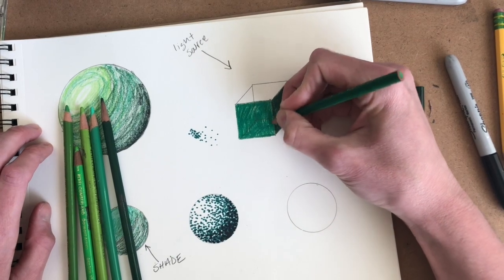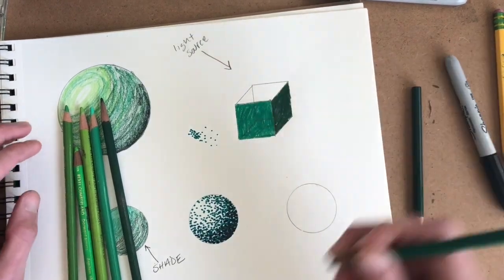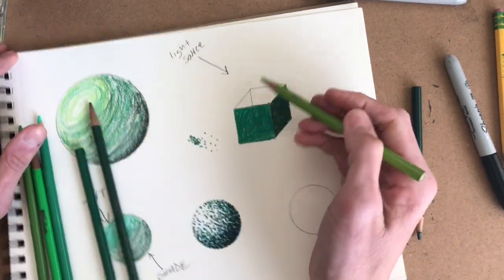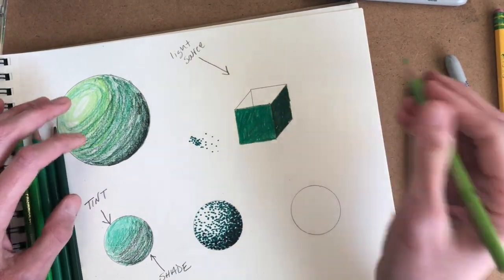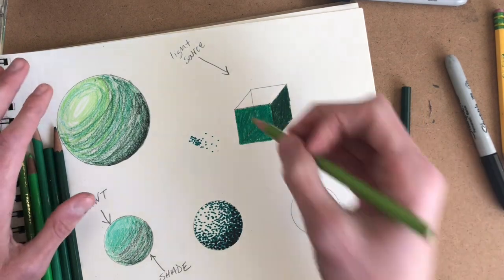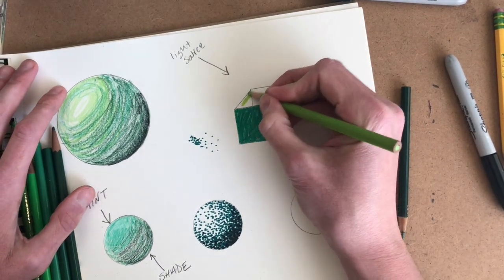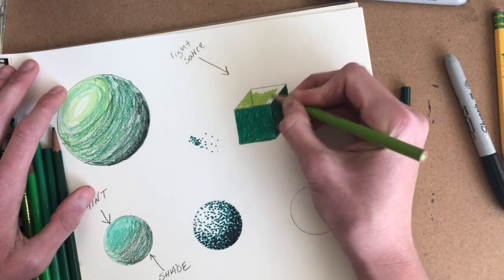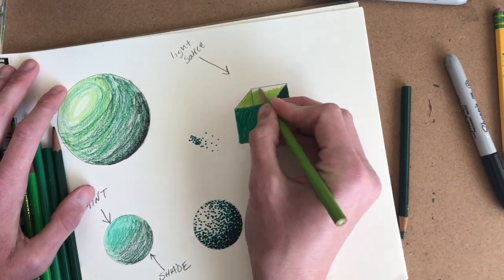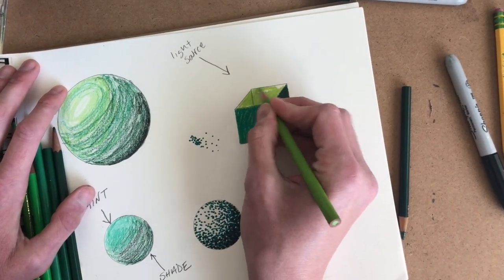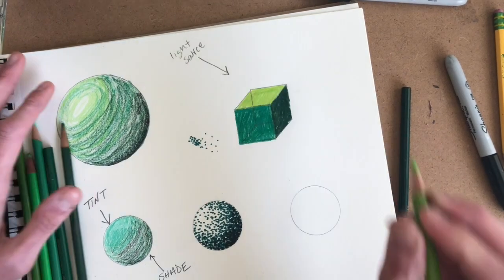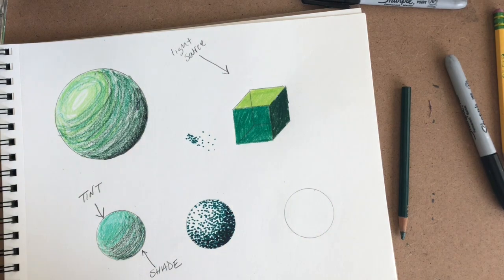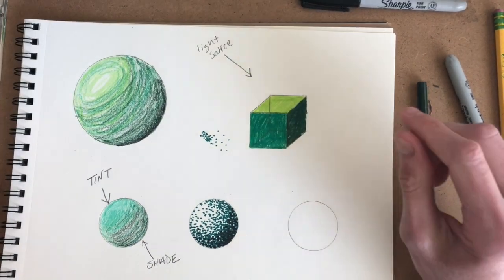And then our last shape is the face or the plane of this cube that's getting direct light, so it's going to be our lightest shape. So I'm going to use my lightest green color pencil and carefully color in that plane. Like that, so this is a variety of different ways to create monochromatic shading.